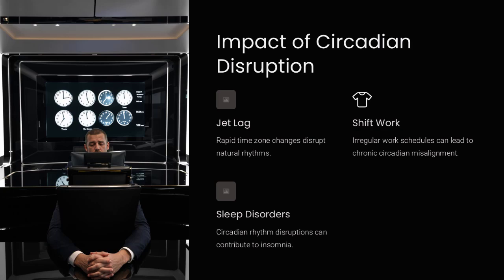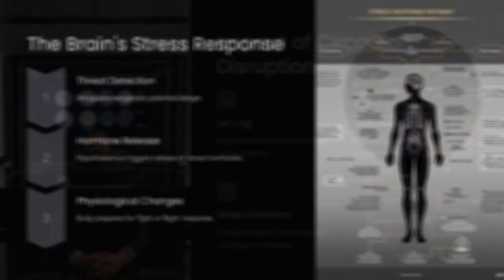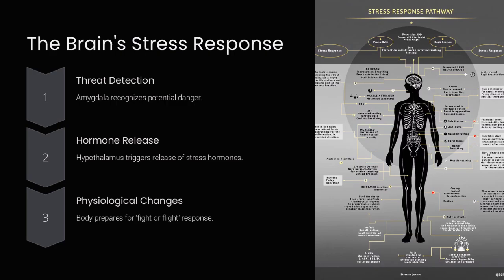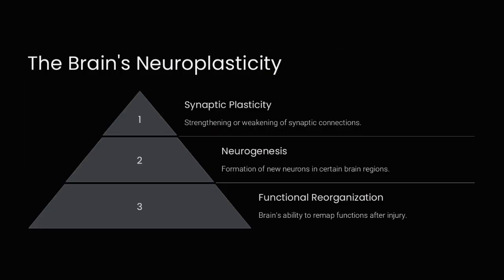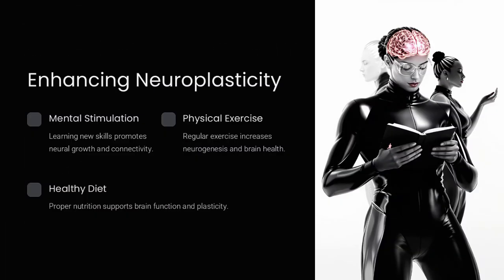So if we compare the brain to a computer, it's less like a high-speed processor and more like an incredibly complex parallel processing network optimized for adaptability, learning, and pattern recognition. Its limitations are not flaws, but trade-offs that have allowed humans to evolve as the most cognitively advanced species on Earth.